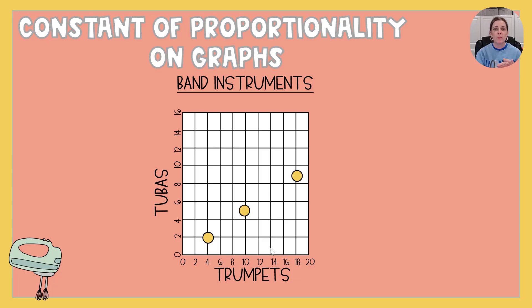Let's look at another one. Band instruments. This time we've got tubas and trumpets. Again, I'm picking out this formula. That's what I want to use. I'm looking at the point that is exactly on line so that there's no guessing. And the y I can see is 2 and the x is 4. So 2 divided by 4 is 0.5 or 1 half. Here the constant of proportionality is 1 half.